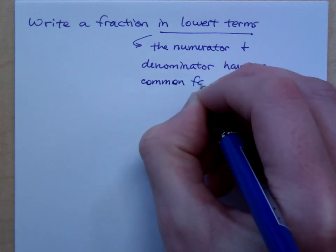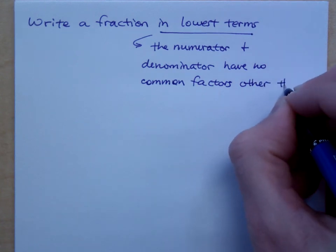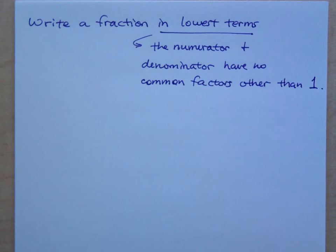They have no common factors other than 1. Lowest terms means the numerator and denominator have no common factors other than 1.